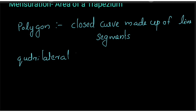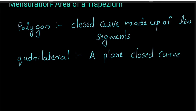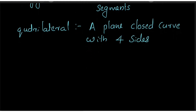What is a quadrilateral? It is a plane closed curve. If it is a plane closed curve, it is a polygon with four sides. It is a plane closed curve with four sides. That is a quadrilateral.